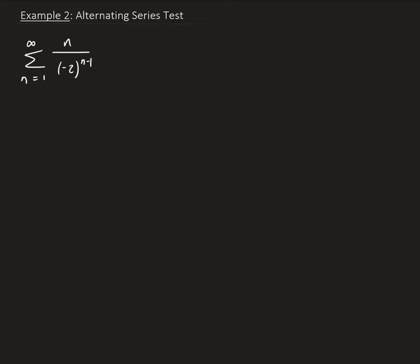In this example, we want to determine whether this series converges or diverges using the alternating series test. So let's look at the first four terms just to give us an idea to see whether or not this is an alternating series.